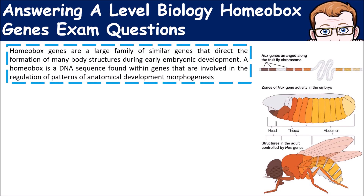Homeobox genes are a relatively large family of genes that are highly conserved within many living organisms, because they direct the formation of many body structures during early embryonic development. A homeobox gene is a DNA sequence found within genes that affects patterns of development — what's called morphogenesis — so how things look.